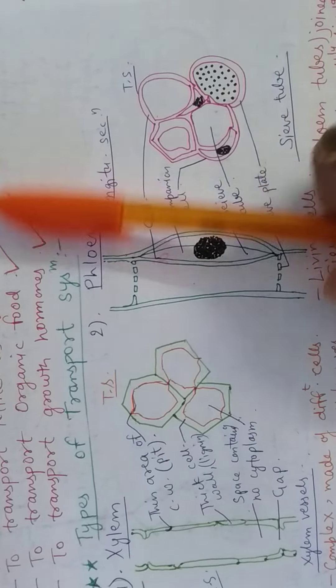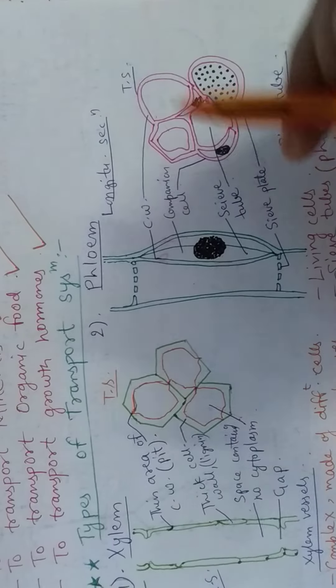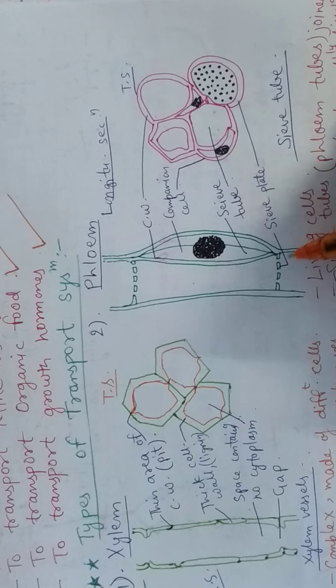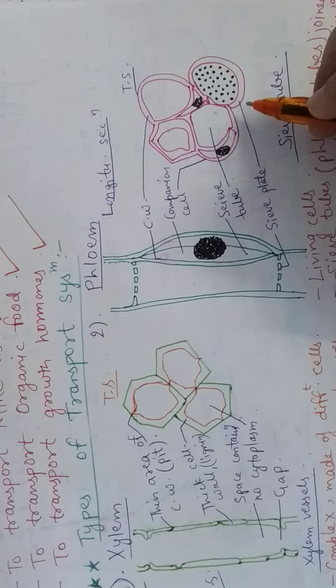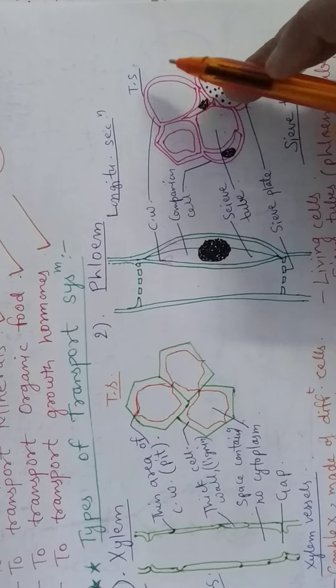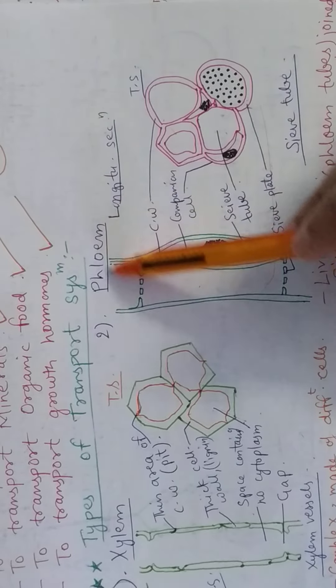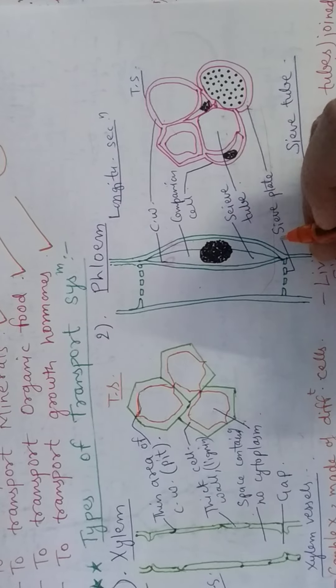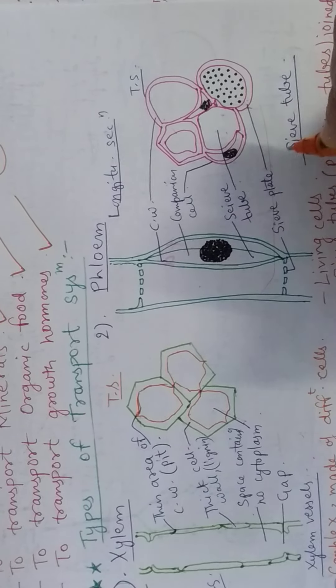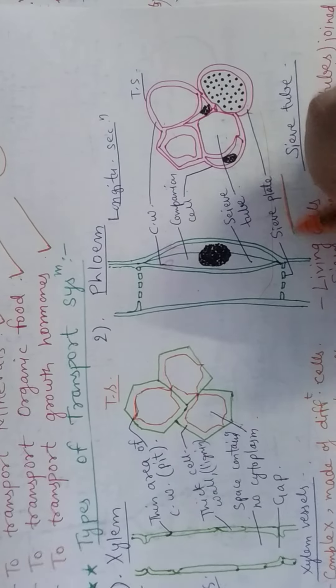These are sieve tubes which we are seeing here and these are sieve tubes which we are seeing in the background. These are sieve plates and this one is the diagram of a sieve tube in the transverse section. So this is a whole overview, a whole diagrammatic representation. This is phloem and that one is xylem. This is sieve plate.